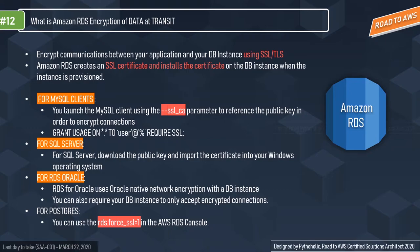Amazon RDS creates an SSL certificate and installs it on the DB instance when the instance is provisioned, securing your data during transit. For MySQL clients, you launch the MySQL client using the '--ssl_ca' parameter to reference the public key to encrypt your connection. You can also use the query 'GRANT USAGE ON *.* TO user@host REQUIRE SSL' to enforce SSL encryption.